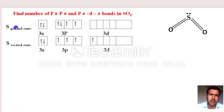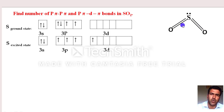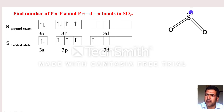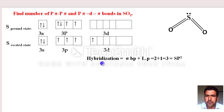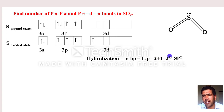Step 2: Find the hybridization of the central atom (sulfur). The formula is: hybridization = sigma bonds + lone pairs. In SO₂, sigma bonds = 2 and lone pairs = 1, so 2 + 1 = 3. Three means SP2 hybridization. In SP2, one s orbital and two p orbitals participate in hybridization. These hybridized orbitals are ignored for pi bond determination.